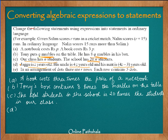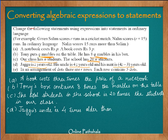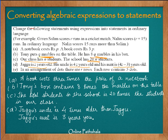We can say that Jagu's uncle is 4 times older than Jagu. And Jagu's aunt is 3 years younger than his uncle, because her age is 3 years less than 4z.